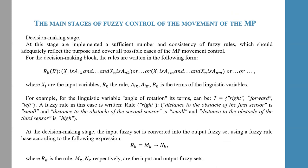Decision-making stage. At this stage, a sufficient number of fuzzy rules are implemented, which should adequately reflect the purpose of covering possible cases of movement control. For the decision-making block, rules are written in the following form — for example, the linguistic variable 'angle of rotation' and its terms such as 'forward' and 'left'. At the decision-making stage, the input fuzzy set is converted into the output fuzzy set using the fuzzy rule base according to the following expression.